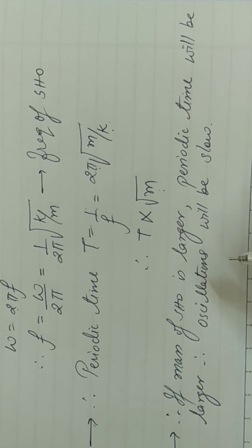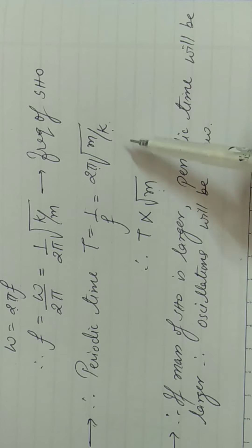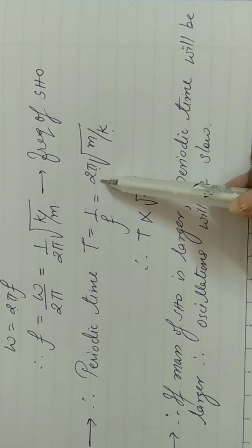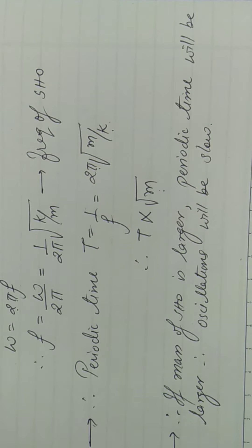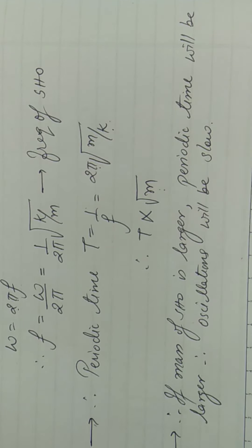Periodic time zyada hai ka matlab kya hota hai? Ki oscillator ko ek oscillation complete karne mein zyada time lagta hai. Agar usko ek oscillation complete karne mein zyada time lagta hai, iska matlab kya hua? Oscillations will be very slow.